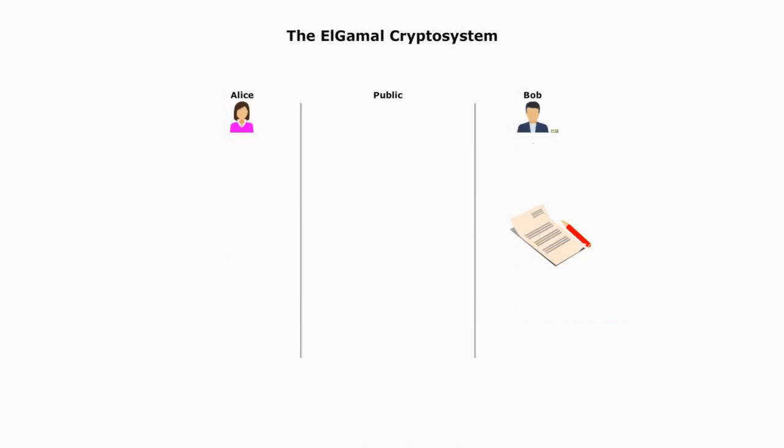Here is the scenario. Bob wants to send a message to Alice. Bob is the message sender and Alice is the message receiver. They agree to use Elgamal for encryption and decryption. Keep in mind, the public key system always starts with the message receiver, who is responsible for public key generation.